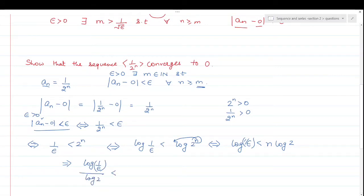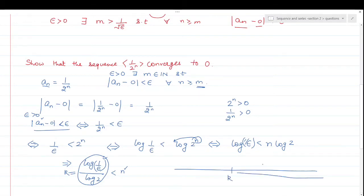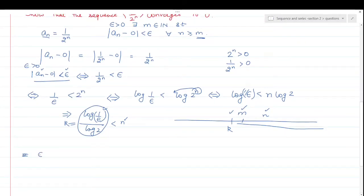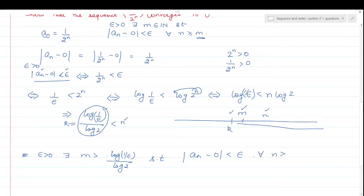log(2) is a positive number, so dividing by it doesn't change the inequality. What we get: n is greater than this number — log(1/epsilon)/log(2). This may be any real number. Suppose this real number equals some k. Then all natural numbers greater than k satisfy the condition. We find a natural number M greater than k. Finally, for every epsilon > 0, there exists a natural number M greater than log(1/epsilon)/log(2), such that mod of aₙ minus 0 is less than epsilon for all n ≥ M. So the sequence converges to 0.